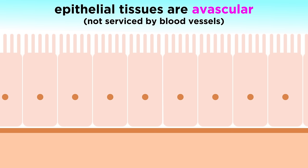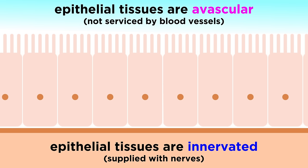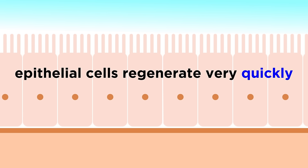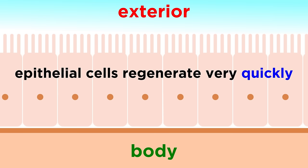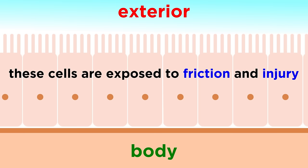We should be aware that epithelial tissues are avascular, which means there are no blood vessels, but they are innervated, which means they are supplied with nerves. We will learn much more about blood vessels and nerves later in the series. And lastly, epithelial cells regenerate very quickly by necessity, because given their position at the boundary between some component of the body and the exterior, there is the potential for significant friction, or even injury.